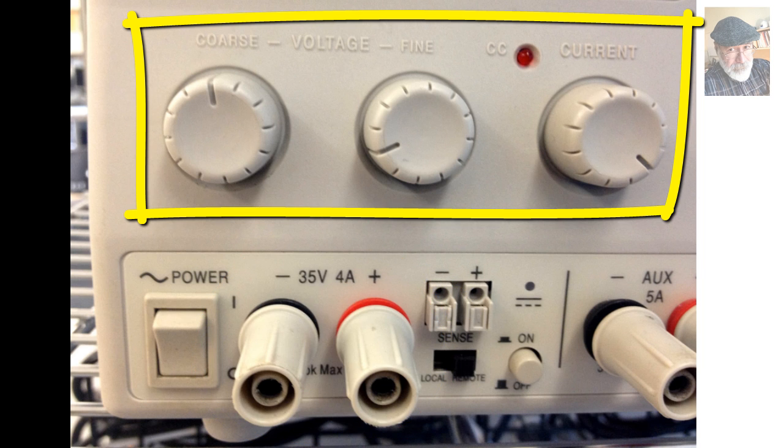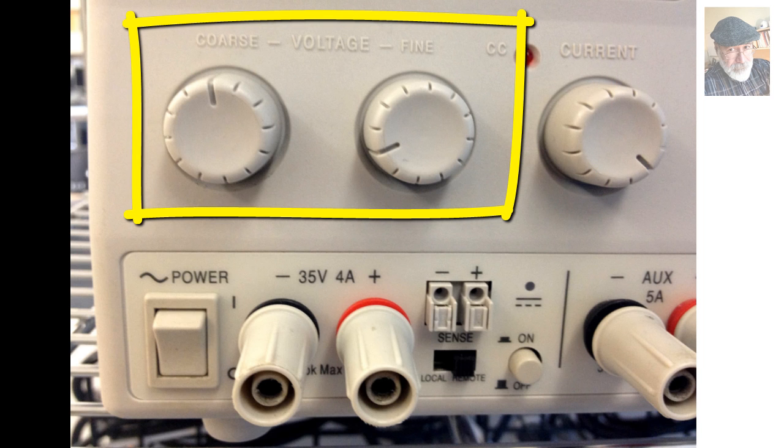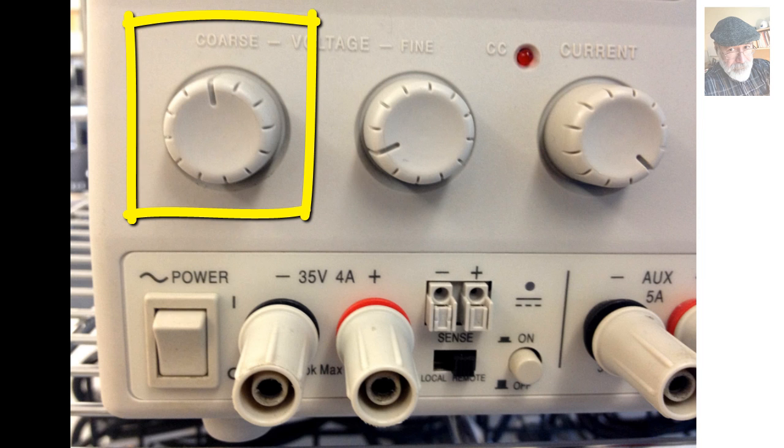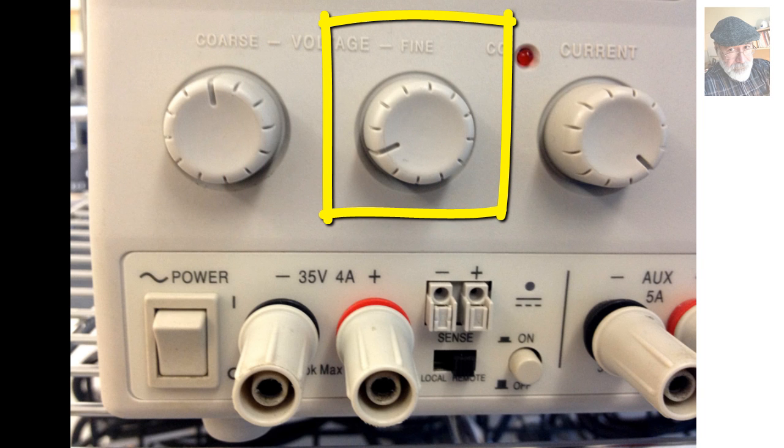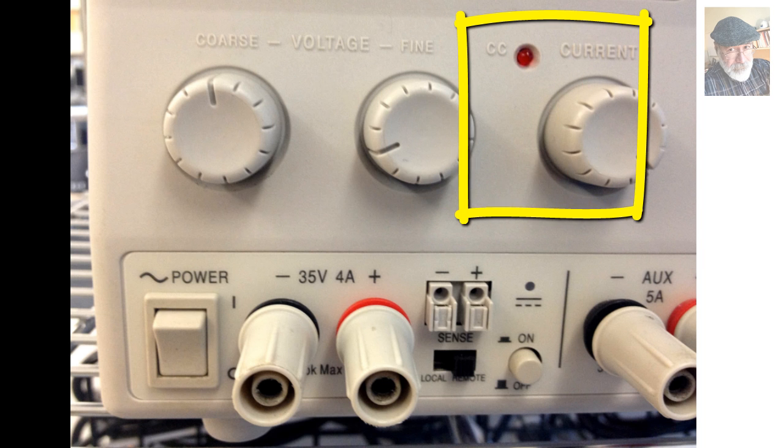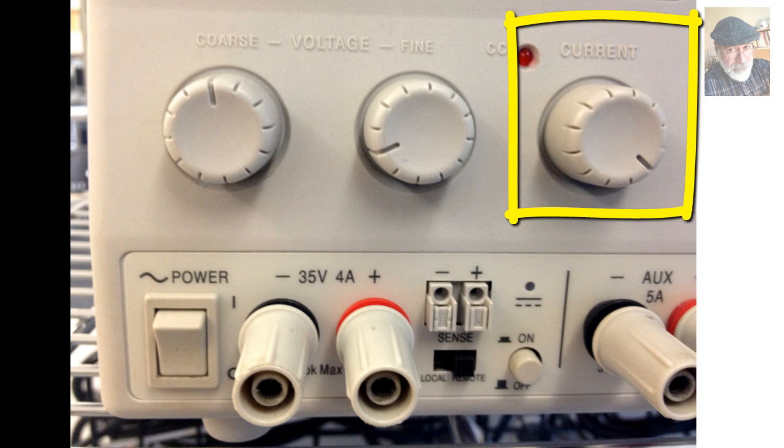And three control knobs. To set the voltage limit, we use two knobs, the coarse control to bring the value in the vicinity of the target voltage, and then the fine control to zero in on the actual voltage that we want. To set the current limit, there is only one knob.